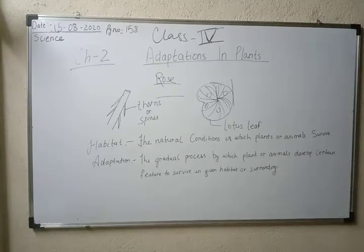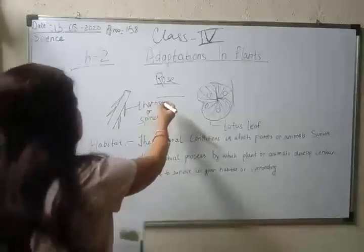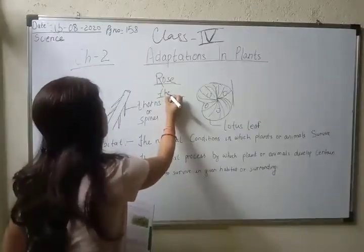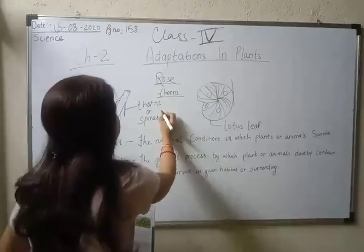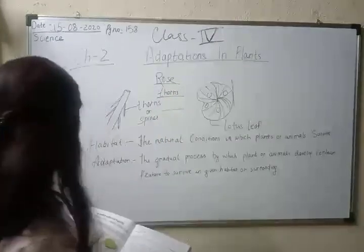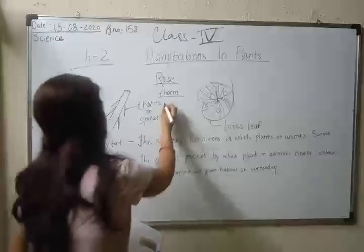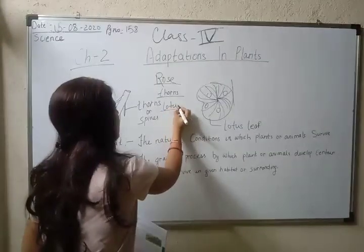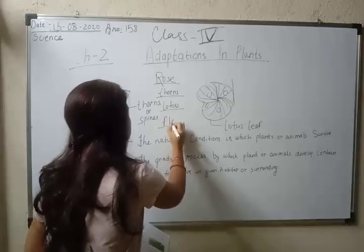So what will you write? In the first blank, write 'thorns.' In the second example, you can write 'lotus.' And in the last blank, you can write 'float.'